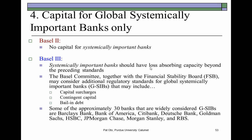In the fourth standard, it calls for capital for global systemically important banks. Under Basel II there was none. Under Basel III, systemically important banks — also known as too-big-to-fail — should have loss-absorbing capacity beyond the preceding standards. This is somewhat controversial because it is a stiffer imposition on huge banks that, if they fail, may drag the entire economy down with them.